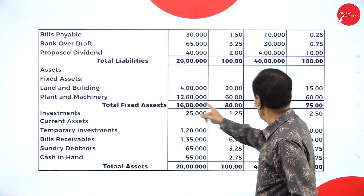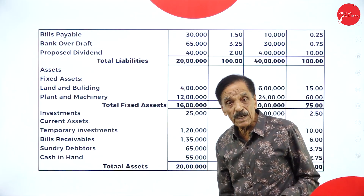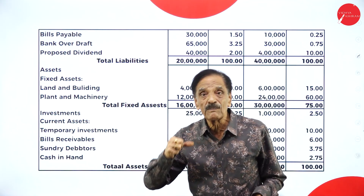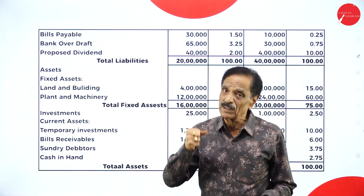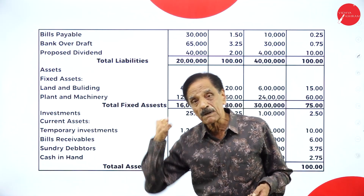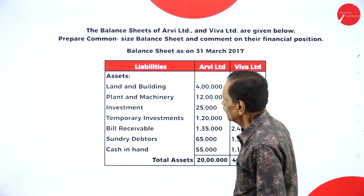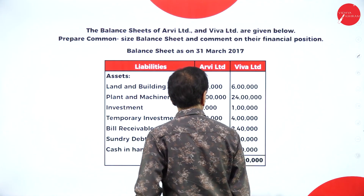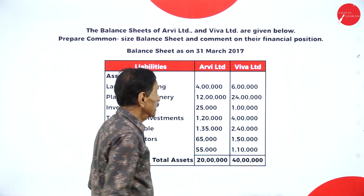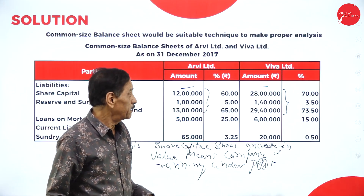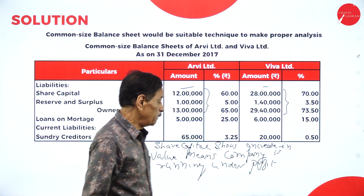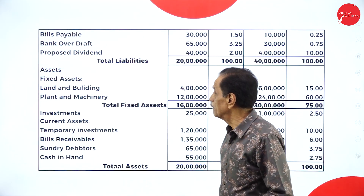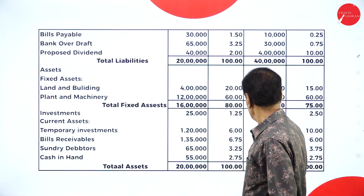Plant and machinery 12 lakh becomes 24 lakh — once again, purchasing power has been increased, meaning you have the capacity and the cash to purchase assets. Building 4 lakh becomes 6 lakh. These are comparison statements — just write the comparison statements and note the improvement.